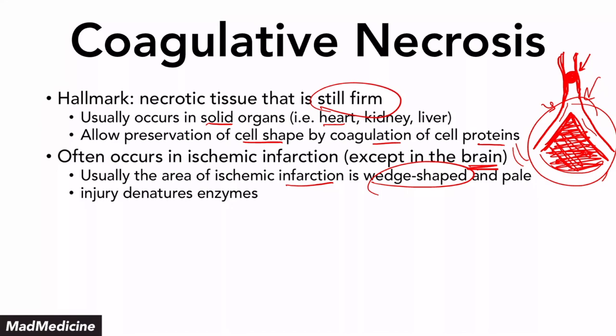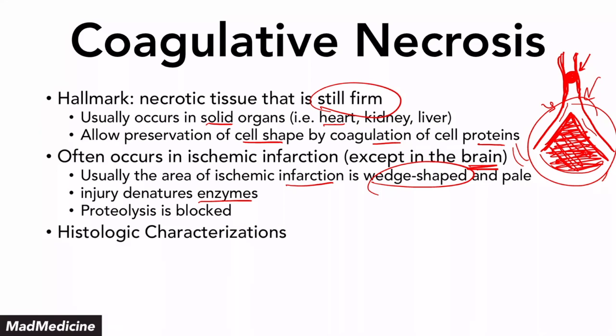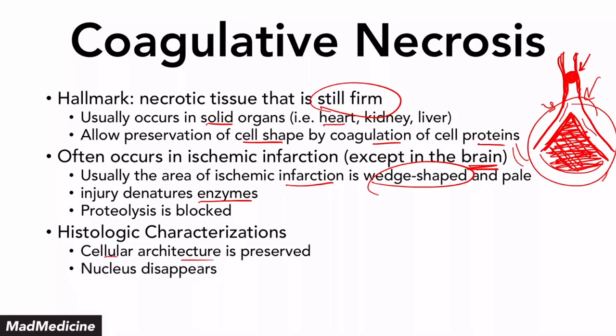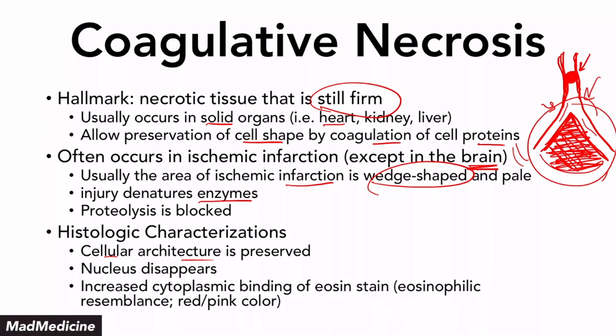Usually the injury is going to denature enzymes and proteolysis is going to be blocked. The histological characterizations you need to know are: number one, the cellular architecture is preserved; number two, the nucleus is going to disappear — very important. The nucleus goes away through pycnosis to karyorexis to karyolysis. And then you're going to see an increase in the cytoplasmic binding of eosin stain — you're going to see a red or pink color when you look at the histology slide.